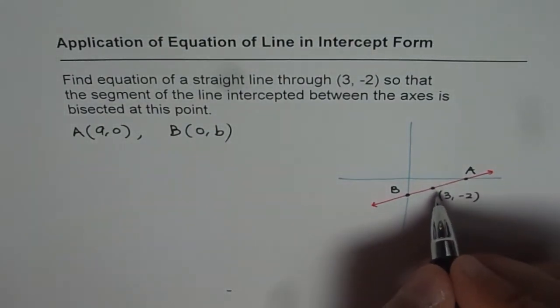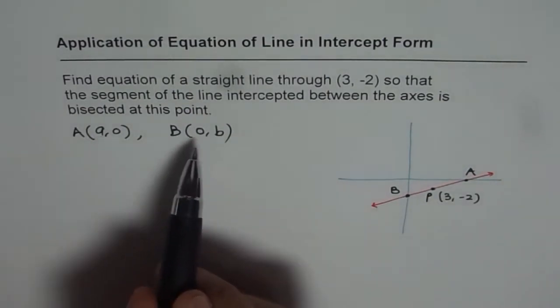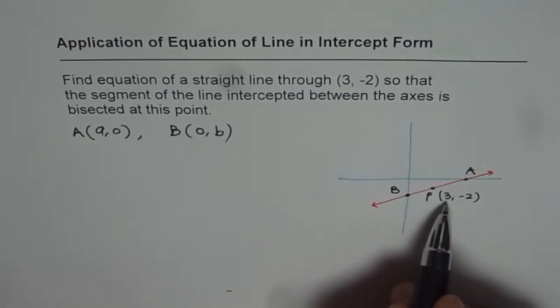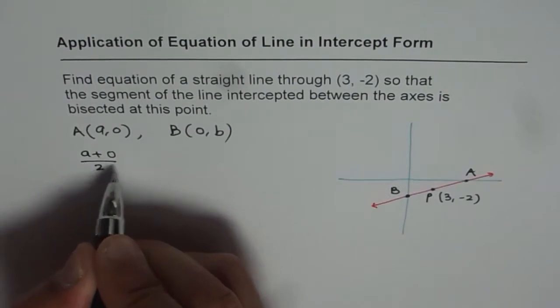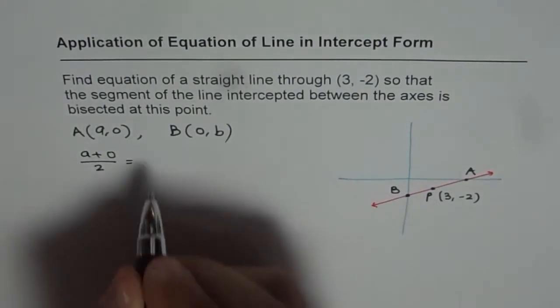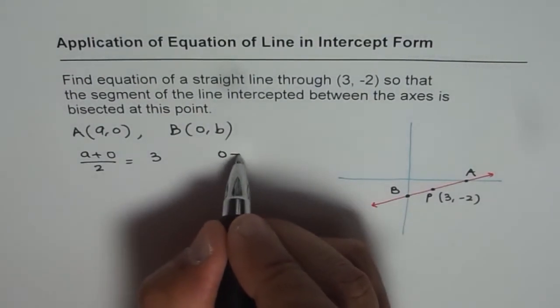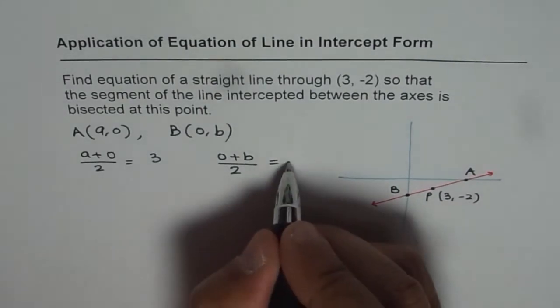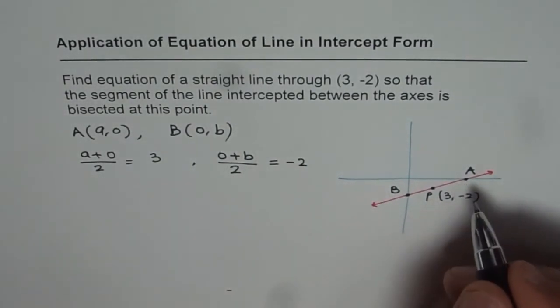Now the midpoint is B for us. So that basically means if I add the x-values and find the average of it, it should be equal to 3. So what I am trying to say is that A plus 0 divided by 2 should be equal to 3. Similarly, the y-values average, which is 0 plus B divided by 2 should be equal to -2. So that is what a midpoint will result into.